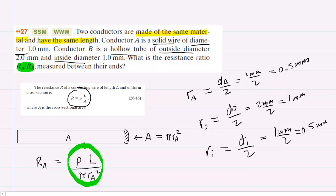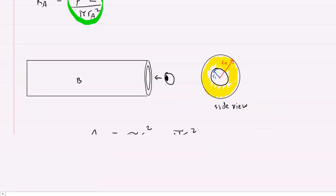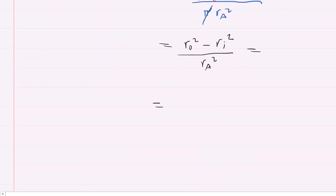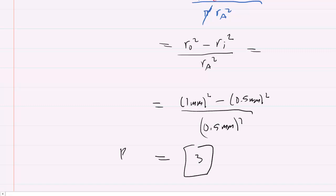So let's go ahead and plug those in. So we'll have 1 millimeter squared minus half of a millimeter squared divided by half of a millimeter squared. And when you work this out, you will end up with 3. So this would be the correct answer for the ratio of the resistance of conductor A to the resistance of conductor B.